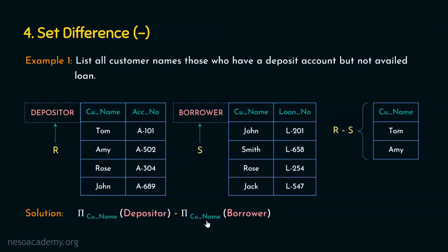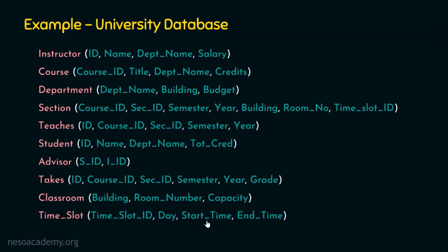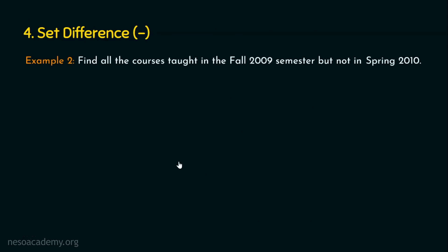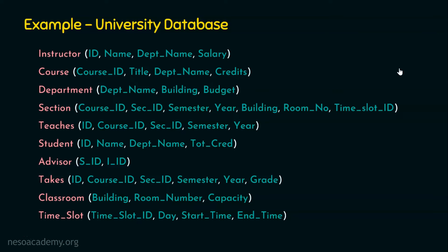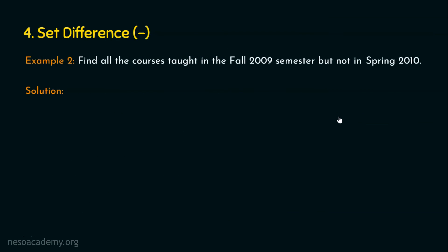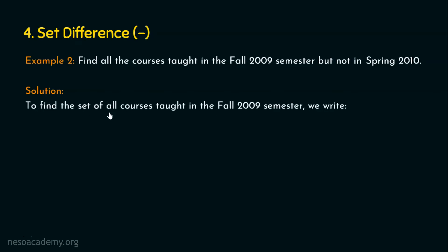Before we see example number two, we need to recap the university database. I request you to pause this video for a while and make a note of this schema. Let's now proceed with example number two: find all the courses taught in fall 2009 semester but not in spring 2010 semester. The table we are going to use is the section relation, because it contains information about the courses, which section the course was offered in, which semester, which year, and other information.